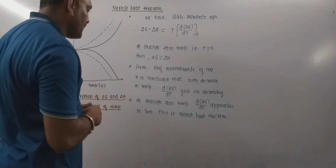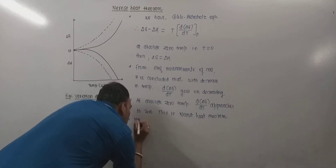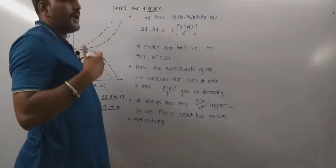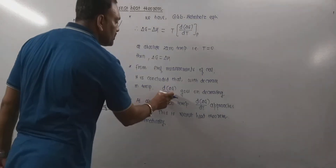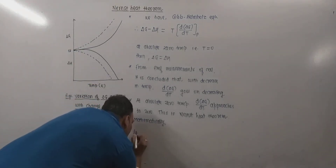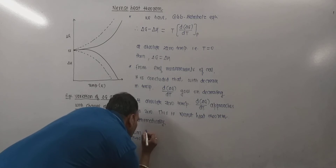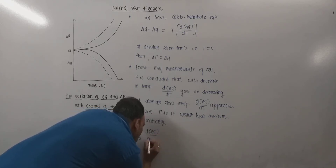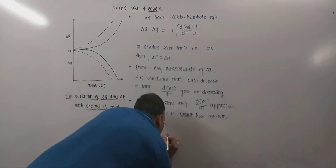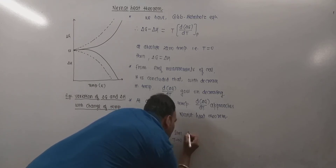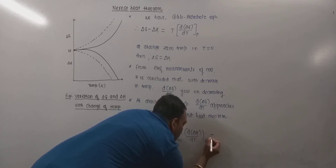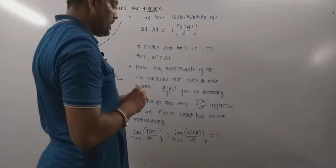Mathematically, as temperature decreases and at absolute zero ΔG equals ΔH, one can write: limit T→0 of d(ΔG)/dT at constant pressure equals limit T→0 of d(ΔH)/dT at constant pressure, and both approach zero as temperature approaches zero. This is equation one.